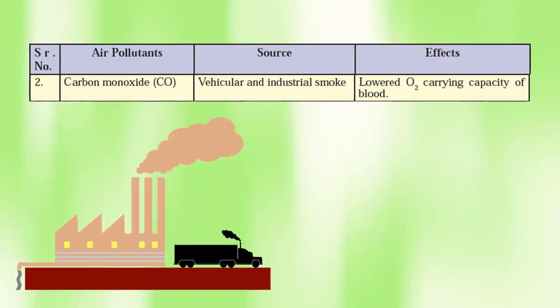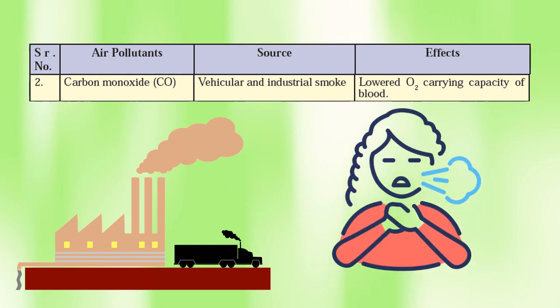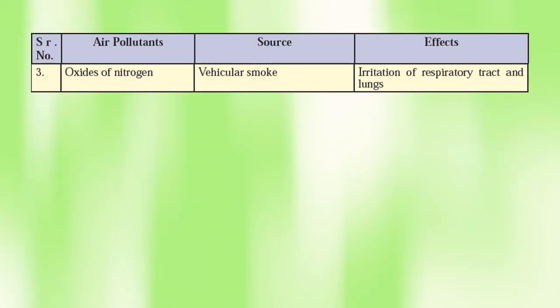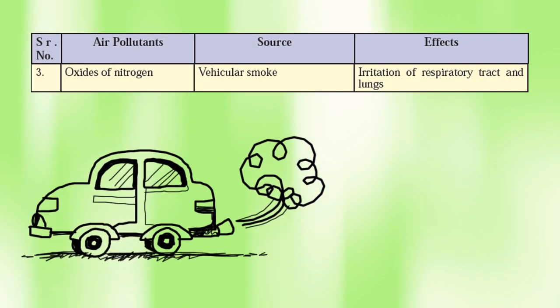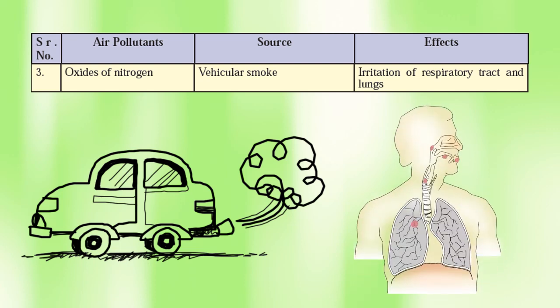Number two, carbon monoxide. Source: vehicular and industrial smoke. Effect: lowered oxygen-carrying capacity of blood, meaning the capacity of blood to carry oxygen is reduced. Number three, oxides of nitrogen. Source: vehicular smoke. Effect: irritation of the respiratory tract and lungs.